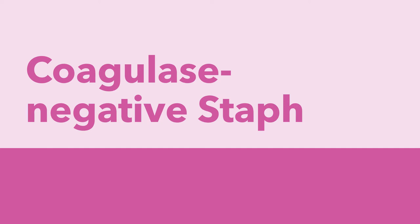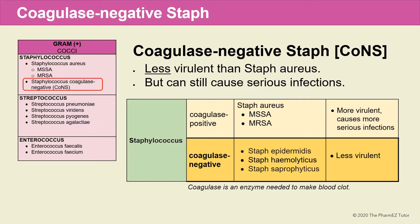Now we've completed our discussion about staph aureus, and we're going to move on to discuss coagulase-negative staph, or CoNS. CoNS is less virulent than staph aureus, but it can still cause serious infections. Looking at the table, the coagulase-positive group includes staph aureus — MSSA and MRSA — and causes more severe infections. The coagulase-negative group includes three types: epidermidis, hemolyticus, and saprophyticus, which is less virulent but can still cause serious infections. Coagulase is an enzyme needed to make blood clots.